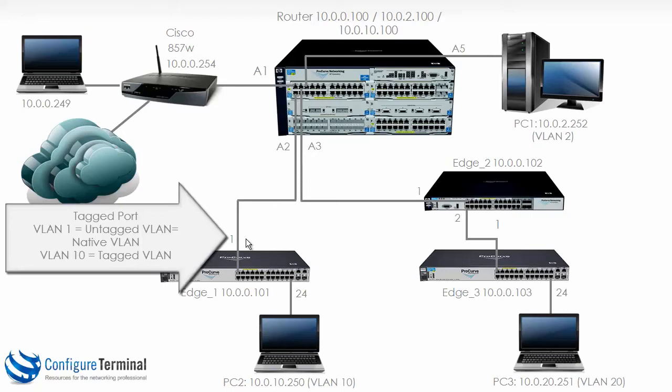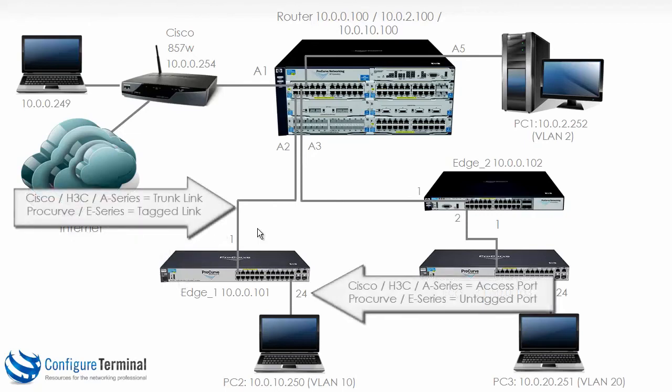The other VLANs — in this case VLAN 10 — will be tagged. Those of you from Cisco or A-Series: this interface would be known as a trunk, but be careful with that term on E-Series. On E-Series, a trunk means link aggregation or EtherChannel. This is called a tagged link, not a trunk in E-Series terminology.